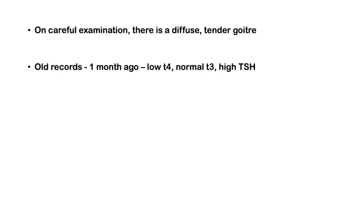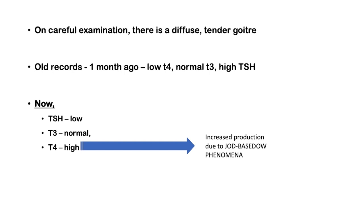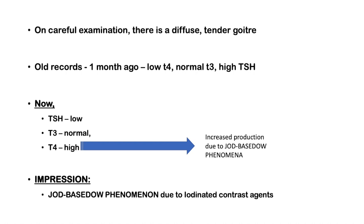The present TSH is very low, T3 is normal, and T4 is high — suggestive of primary thyrotoxicosis. The reason for this transition from primary hypothyroidism to primary thyrotoxicosis in a span of one month is increased production of thyroid hormones due to Jod-Basedow Phenomenon. This occurred because of the iodinated contrast agents used during her radio contrast study. So the final impression is Jod-Basedow Phenomenon due to iodinated contrast agents.